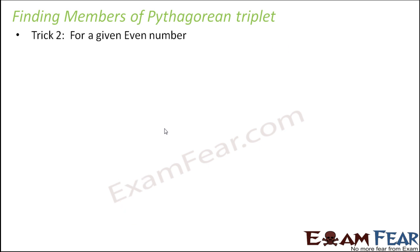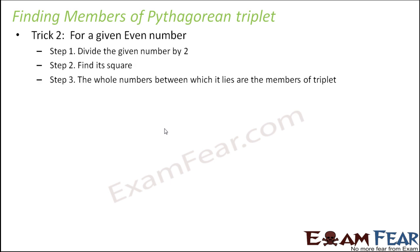So let's look at trick number 2 which is going to be for an even number. So this is also a three step trick. But this time the steps are slightly different. So let's take an example of an even number. So let's say we consider 6. So let's say 6 is the given number. And we have to find out the remaining 2 members of the triplet. So step number 1 is divide the given number by 2. So this time you do not square. You first divide. So you divide 6 by 2. So how much do you get? You get 3.